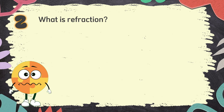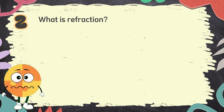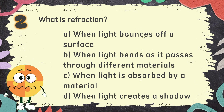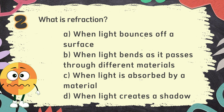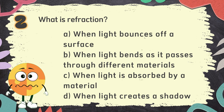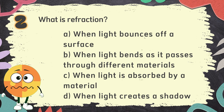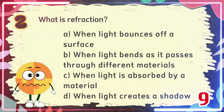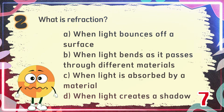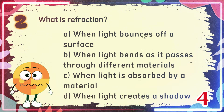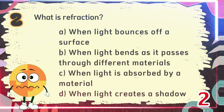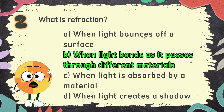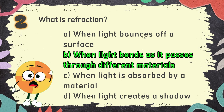Number 2. What is refraction? The choices are: A. When light bounces off a surface, B. When light bends as it passes through different materials, C. When light is absorbed by a material, D. When light creates a shadow. The correct answer is B: When light bends as it passes through different materials.